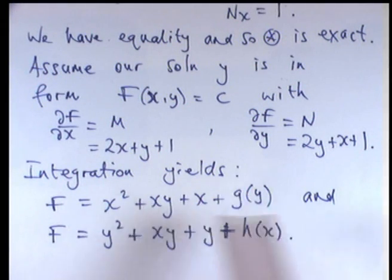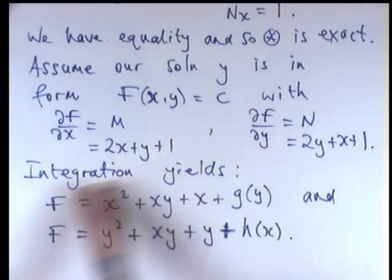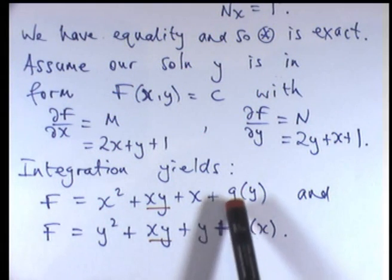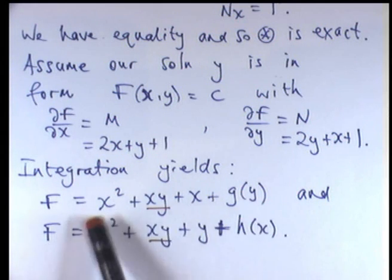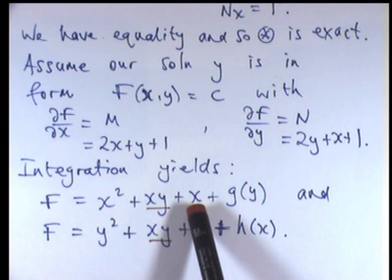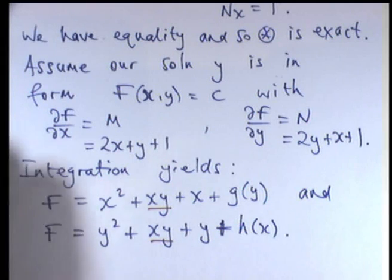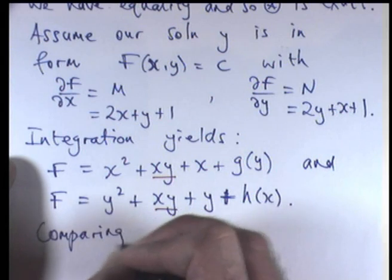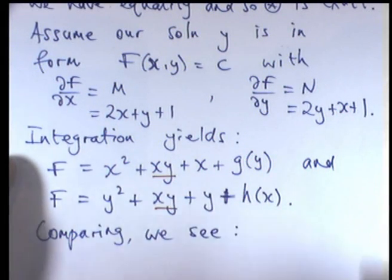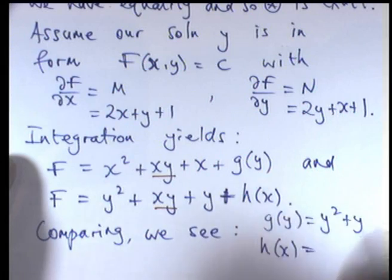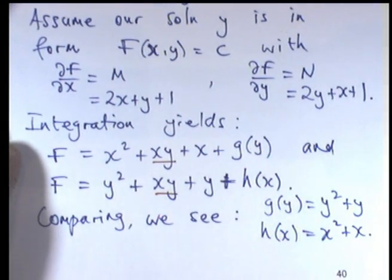All right. So, now what we do is compare. Compare these two expressions for big F. And choose g of y and h of x so that everything here is equal. We can see we already have some common terms. So, how do we choose g of y and h of x to make these two things equal? Well, if we chose h of x to be x squared plus x and g of y to be y squared plus y, then the two expressions would be one and the same. So, we compare. g of y is going to be y squared plus y. And h of x is going to be x squared plus x. So, we take those two things.